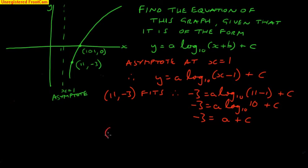I also have the next point, and that's 101, 0, and that also fits the curve that we've got. I'll put those numbers in. So from this, I get that 0 equals a log to base 10 of 101 minus 1 plus c. Let's do a little bit of simplifying here.